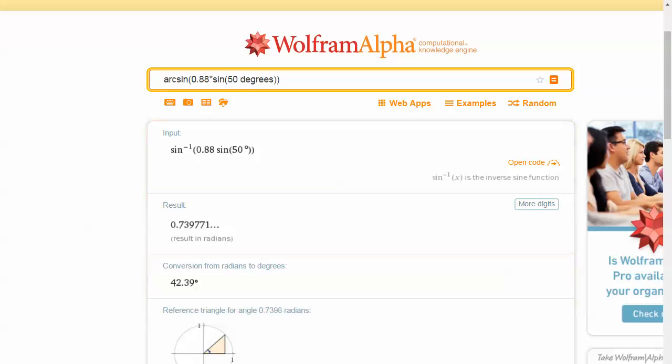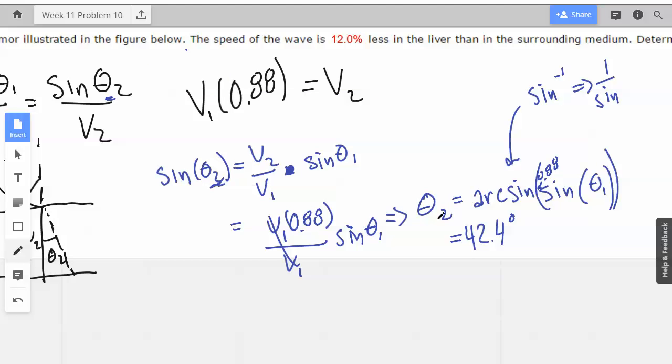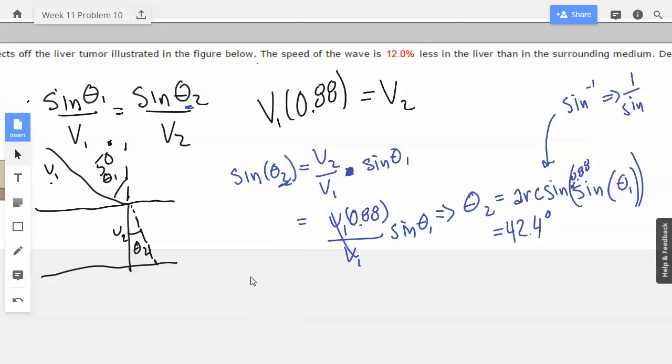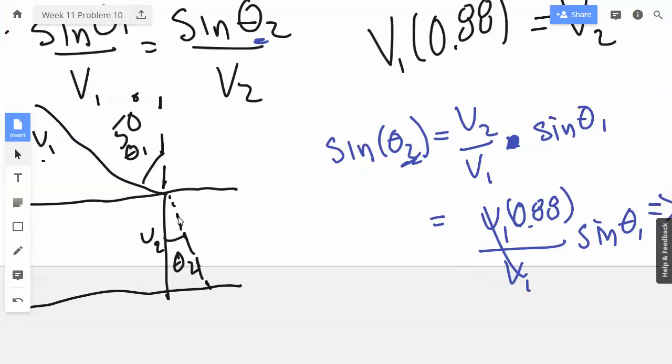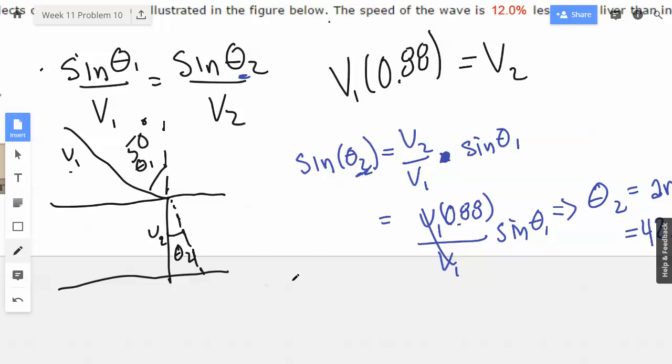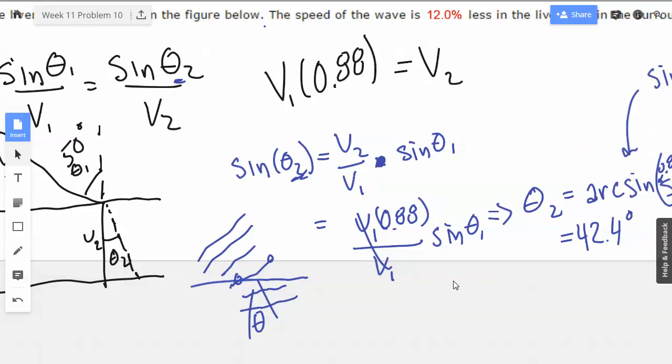42.4 degrees. Don't forget the units. So now we know theta 2, which is mostly what we need done. Let's make sure this makes sense. It slowed down. So when it hits here, it's going to slow down. This part will go slower, longer than this part because it hits sooner. And it should turn down, which makes it a smaller theta. So yes, we should get a smaller angle. Smaller angle is correct.